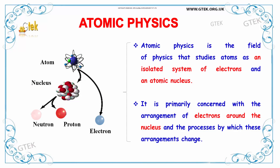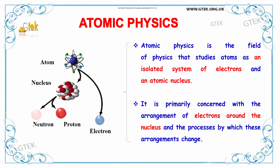What about atomic physics? As I mentioned, it's regarding the atoms. Atomic physics is the field of physics that studies atoms as an isolated system of electrons and an atomic nucleus. You are able to see the nucleus surrounded by the electrons.